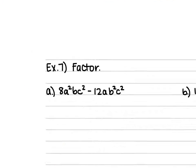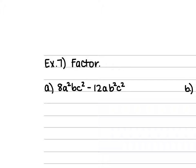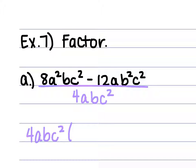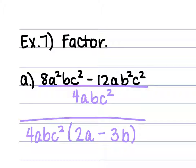For the next example, we have 8a²bc² minus 12ab²c². The greatest common factor between both terms is 4abc². That goes out front. What's left: 8 divided by 4 is 2, with a remaining, b's cancel, c²'s cancel — giving 2a. Then negative 12 divided by 4 is −3, a's cancel, b remains, c's cancel — giving minus 3b. So the answer is 4abc² times (2a minus 3b).